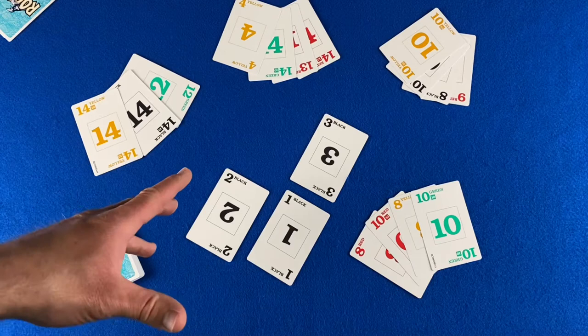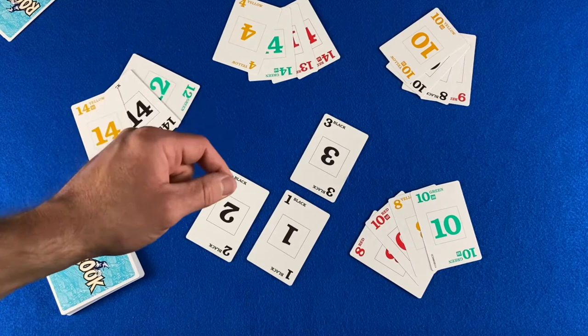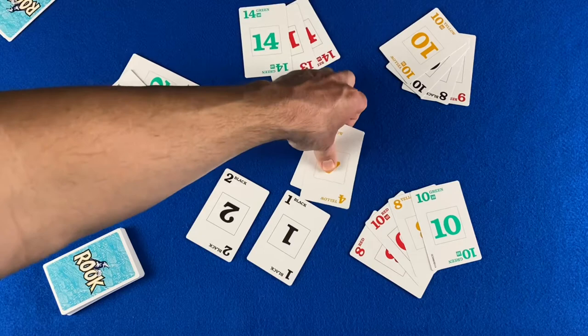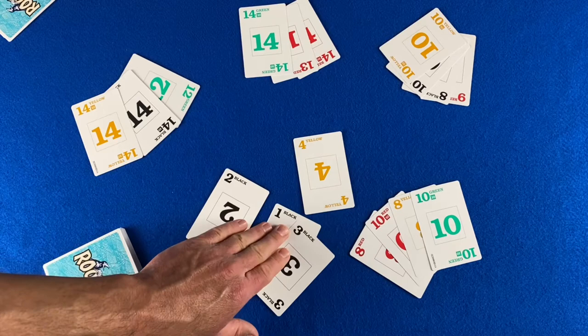The second way to capture cards is to match the sum, and this will allow you to capture more than one card. So player two has a four. And we have a three and a one out here in the pond. So they will play their four and capture the three and the one. Because if I'm not mistaken, three plus one equals four. They collect all the cards and place them face down.